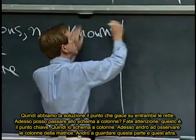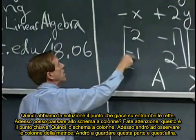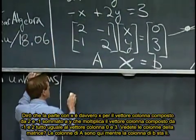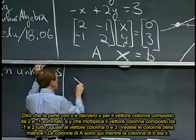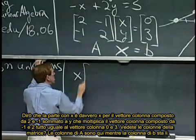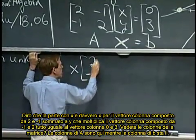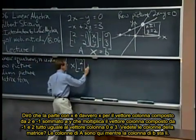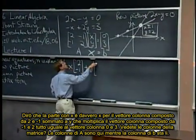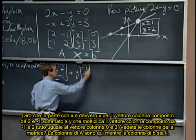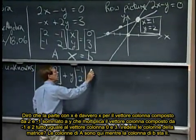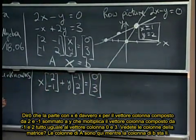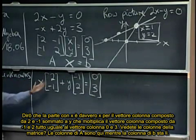I'm now going to look at the columns of the matrix. I'm going to look at this part and this part. I'm going to say that the x part is really x times, you see, I'm putting the two, I'm kind of getting the two equations at once. That part, and then I have a y, and in the first equation it's multiplying a minus one, and in the second equation a two, and on the right-hand side, zero and three.